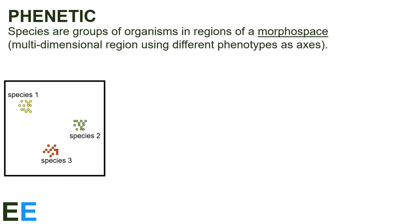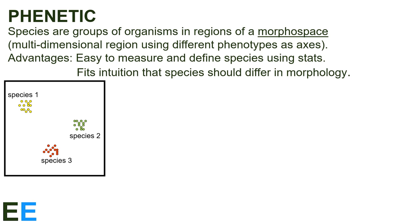Our third species definition seeks to make our definition about species more scientific with numbers. Species are groups of organisms in regions of a morphospace — a multidimensional region using different phenotypes as axes. Since species are different from each other in some way, all we need to do is measure the values of the traits that are relevant, and the members of different species will group together with each other and apart from other species. In the figure shown, the three species differ in their values for two traits and can be seen as three distinct groups in this two-dimensional morphospace. The main advantage of this definition is that it's easy to measure a bunch of individuals and define a species using statistics, which allows us to take opinion out of the equation.